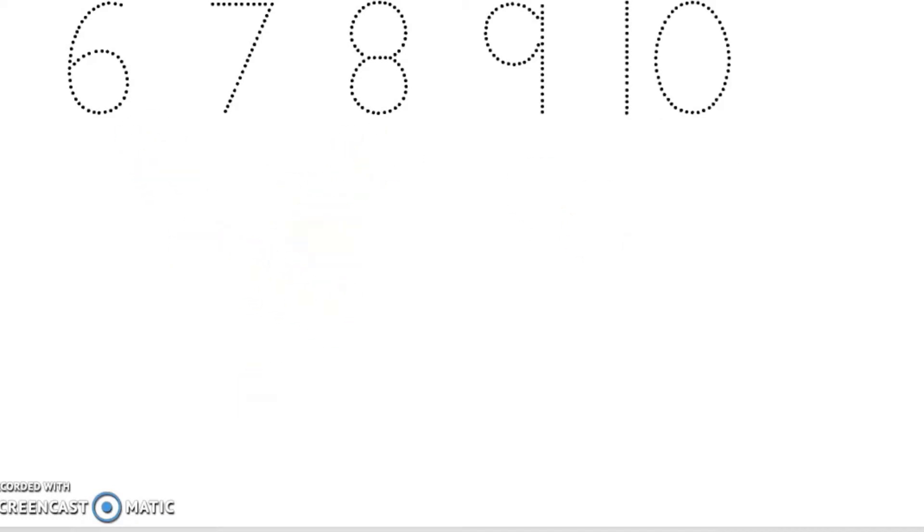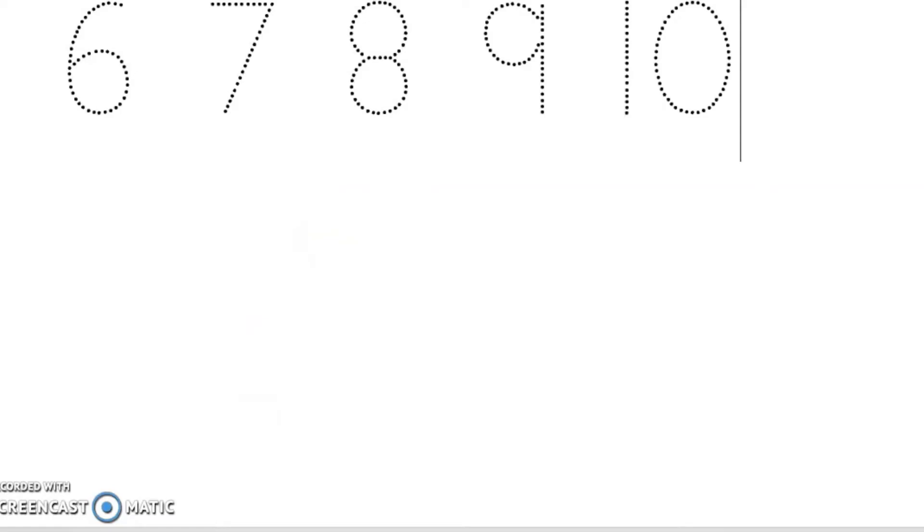In lessons twelve through fifteen we continued to work with the numbers one through five, including tracing them, writing them, and putting them in the correct order. Then we worked with the numbers six, seven, eight, nine, and ten. We practiced counting that many things as well. And you had fun using math stairs to order quantities one through ten.